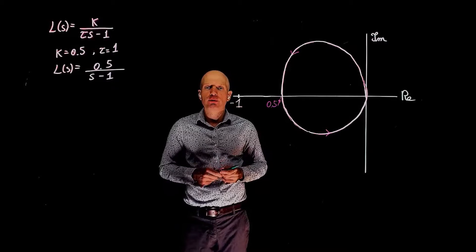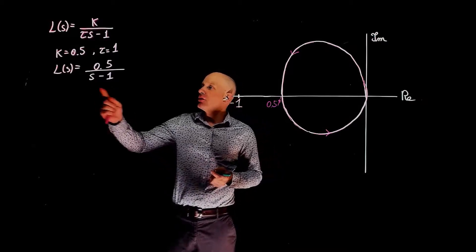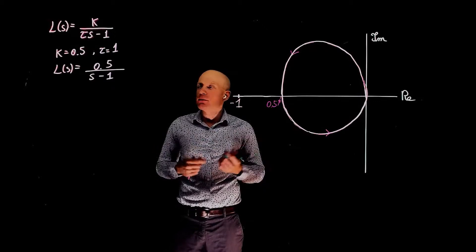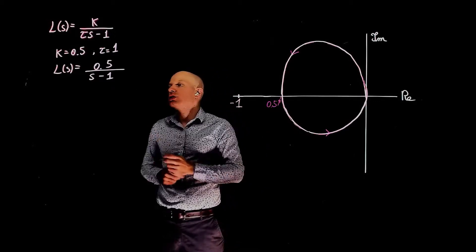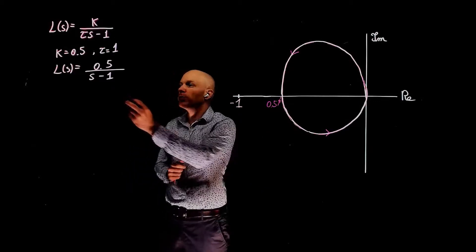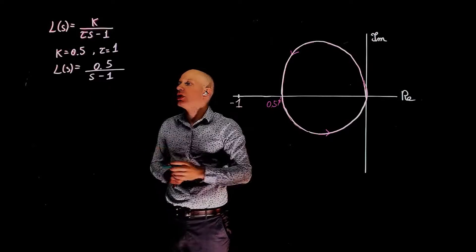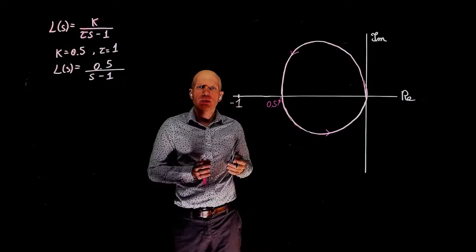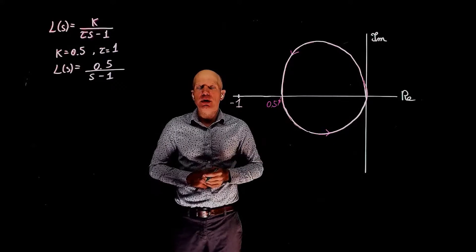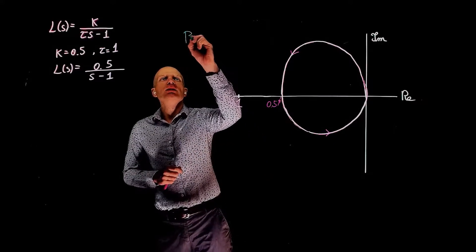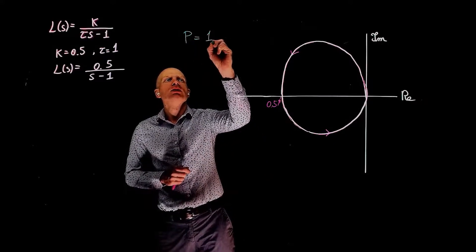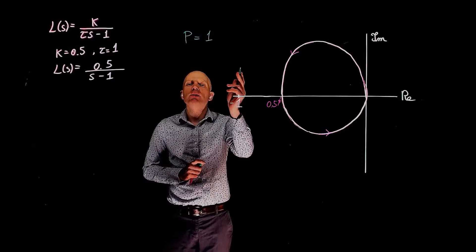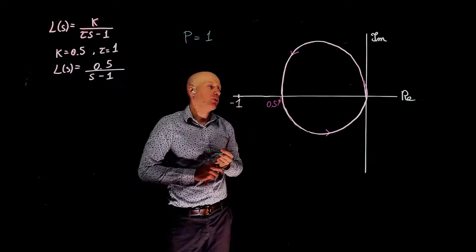Let's start with the number of unstable poles. L is the open-loop transfer function in this unit feedback loop. We can clearly see that there is one unstable pole because the pole of this transfer function is s equals 1. It's a positive number — the pole is located on the right side of the s-plane, which means that P, the number of unstable poles, equals 1.